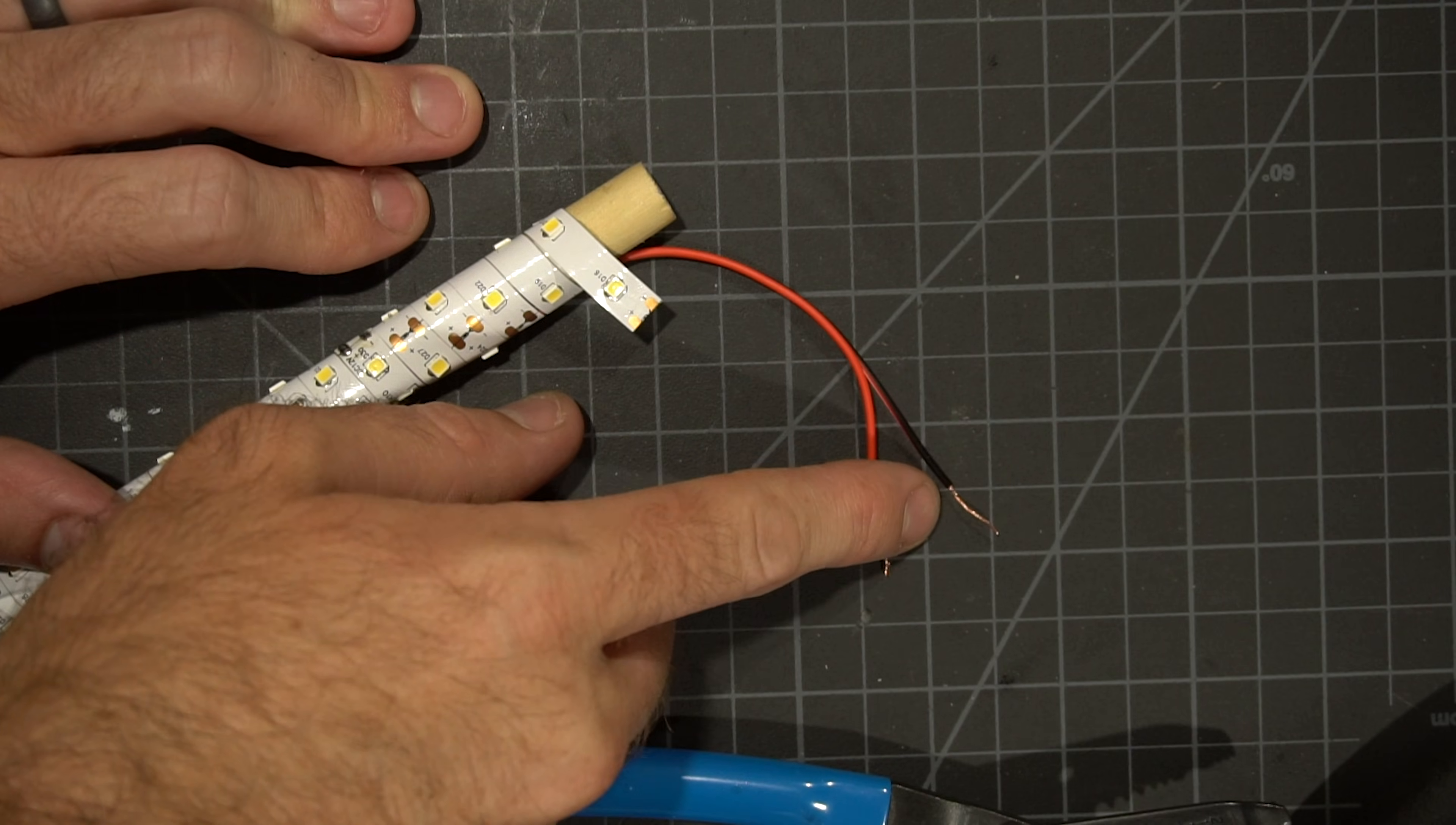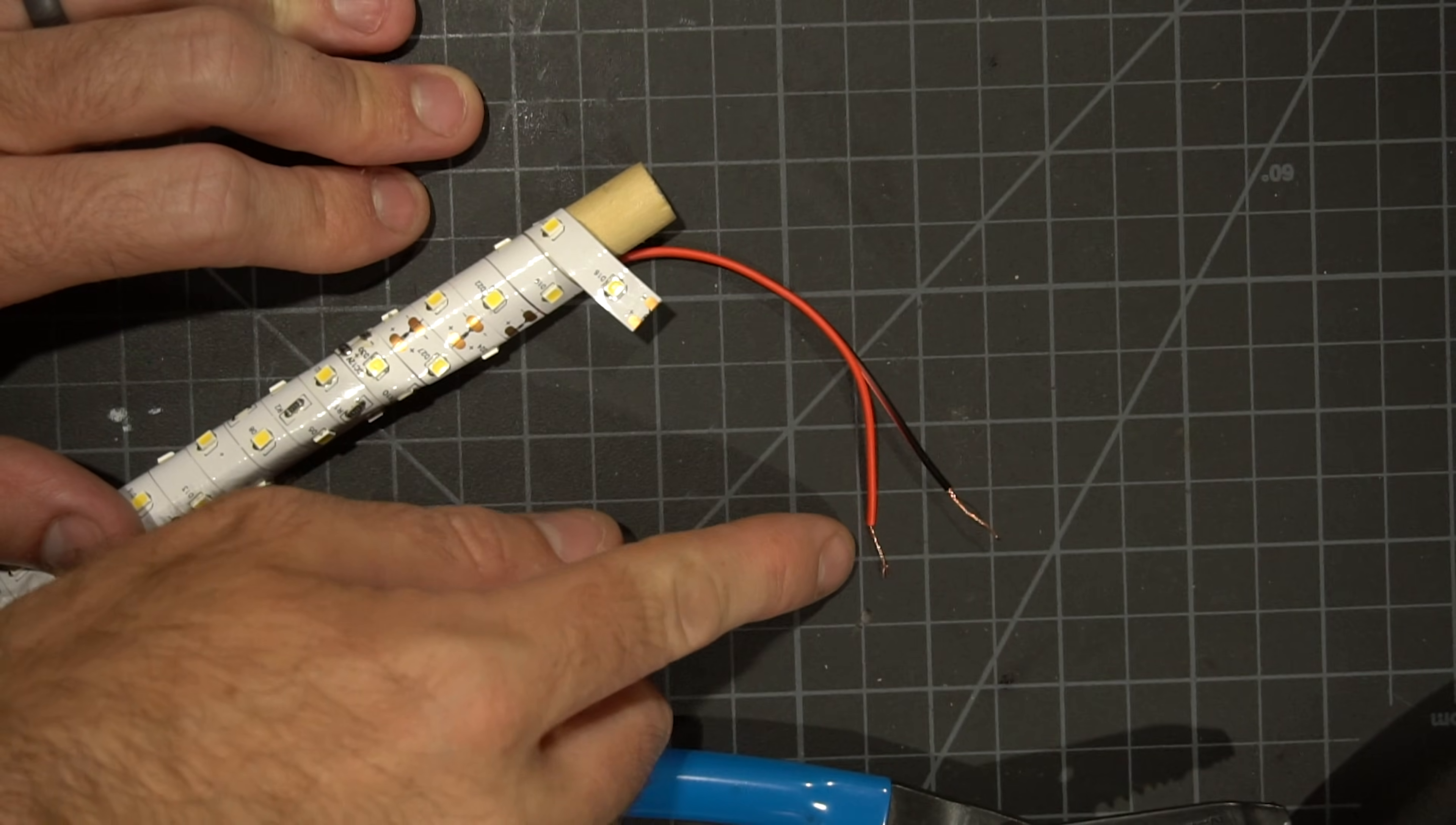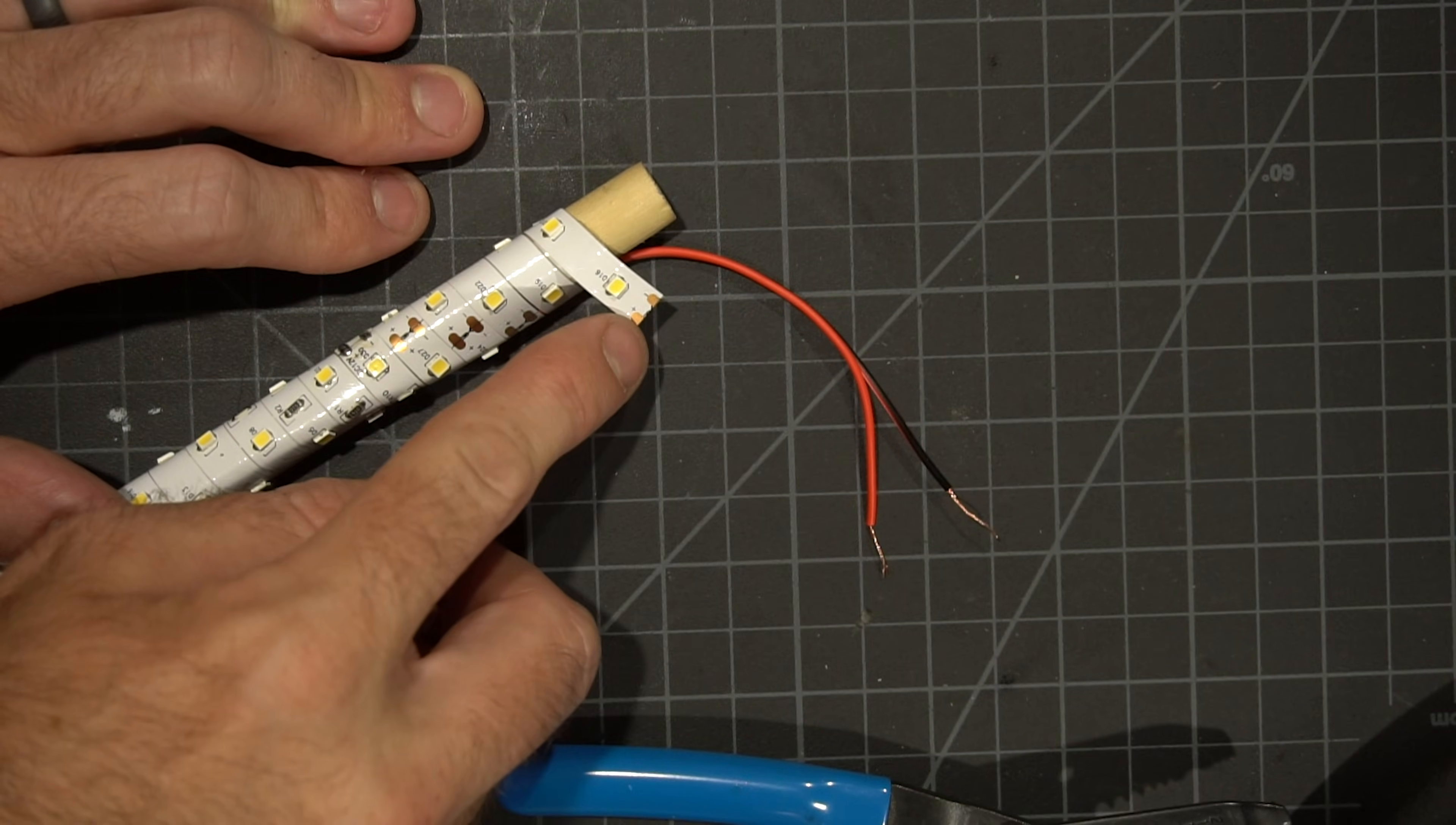Strip the ends of the extra wire on the end we just cut, and we want to solder the black to the negative and the red to the positive. These should be labeled somewhere on your LED strip.